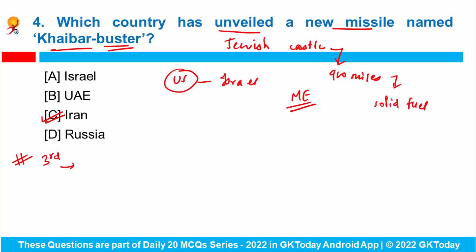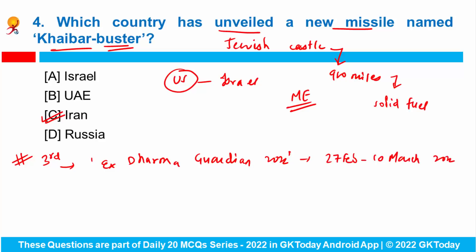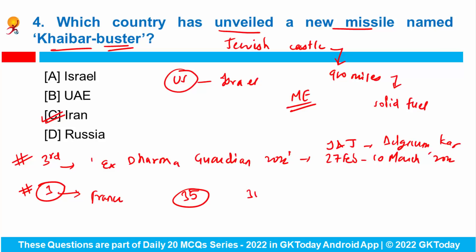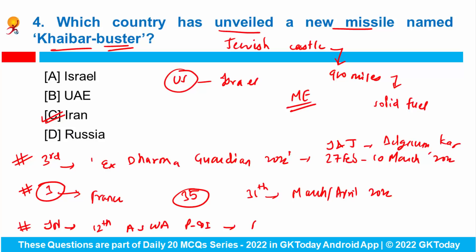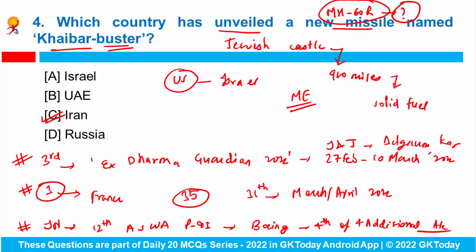Apart from it, the third edition of joint military exercise Dharma Guardian 2022 will be conducted from 27th February to 10th March 2022 between India and Japan at Belgaum in Karnataka. Recently, three more Rafale fighter aircraft landed in India from France; the total Rafale fleet with the IAF has reached 35, and the 36th and final aircraft will arrive from France by March or April 2022. The Indian Navy has also received its 12th anti-submarine warfare aircraft P-8I from US aerospace company Boeing.